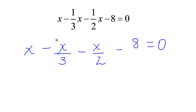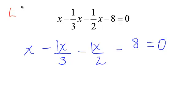So this is still 1/3 x and still 1/2 x. Now what is my least common denominator? I have one term over 1, one term over 3, one term over 2, and one term over 1. And of course that is just 0 over 1. My least common denominator — 3 times 2 — will be 6. So my least common denominator is 6. That is what will make this problem easier.